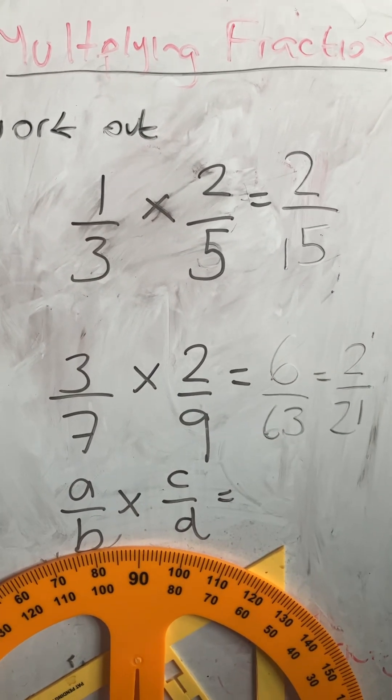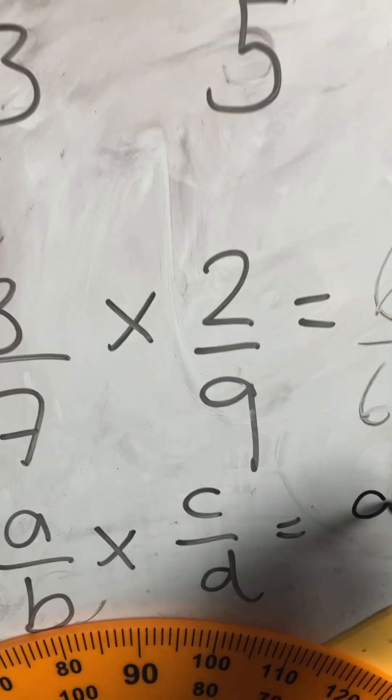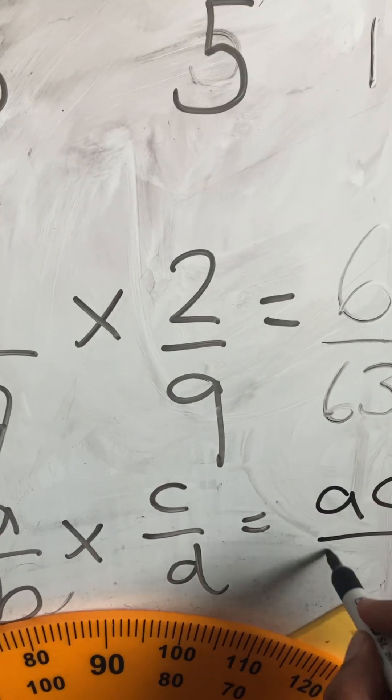This last one, A over B times C over D. I do A times C, which is AC, and then B times D, which is BD.